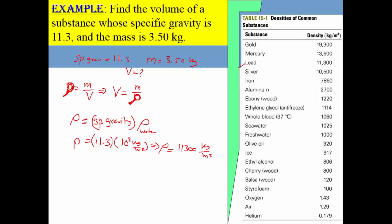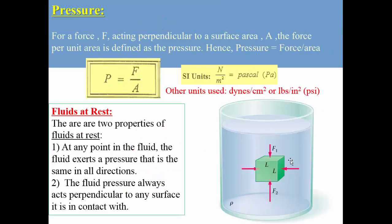This yields 11,300 kilogram per cubic meter. As you can see, this material represents lead. Now we can find the volume by dividing the mass of 3.5 kilogram by the density of 11,300 kilogram per cubic meter. Kilogram cancels out, and the answer is in cubic meters, yielding 3.10 times 10 to the power negative 4 cubic meters, which is around 310 cubic centimeters.